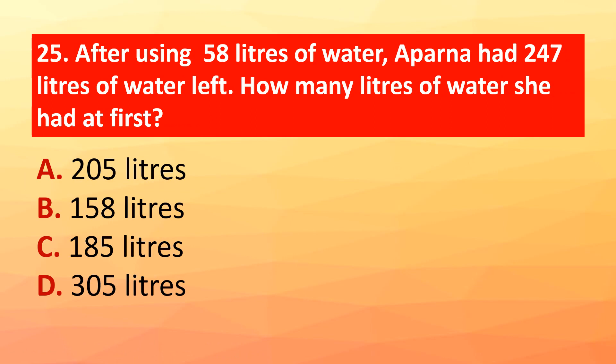Question 25: After using 58 liters of water, Apparna had 247 liters of water left. How many liters of water did she have at first? The correct answer is option D: 305 liters.